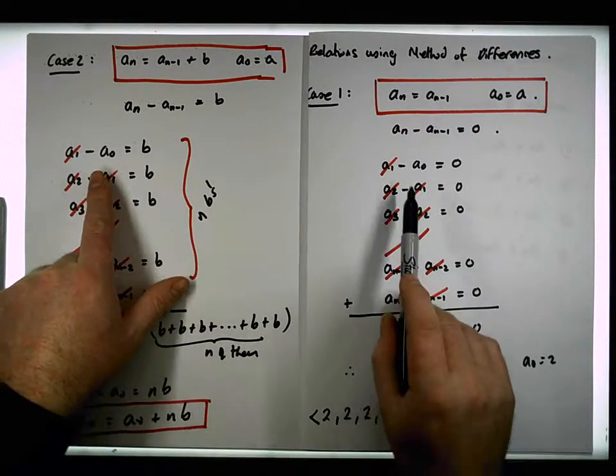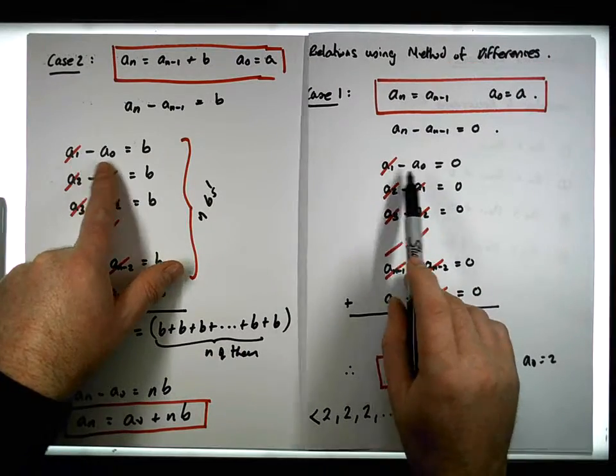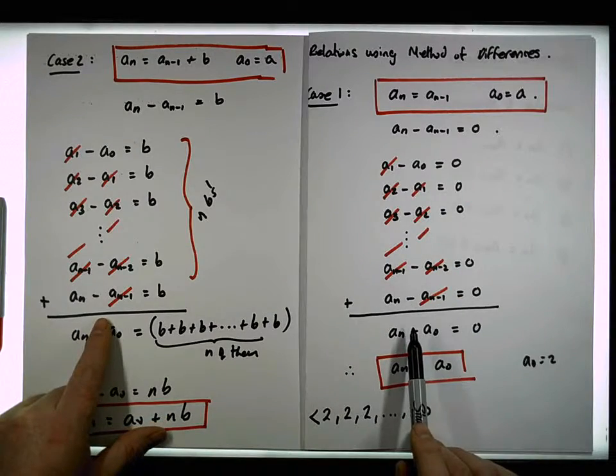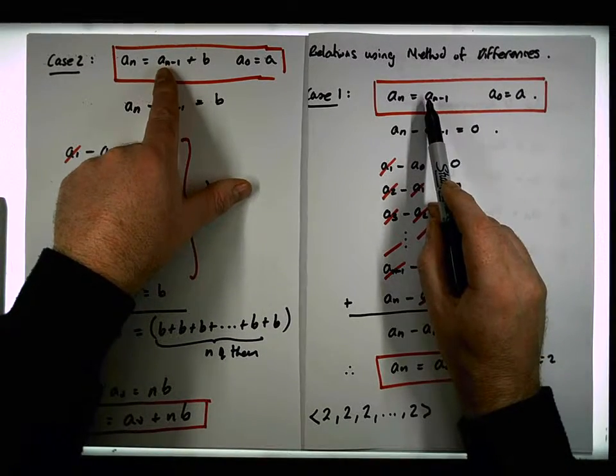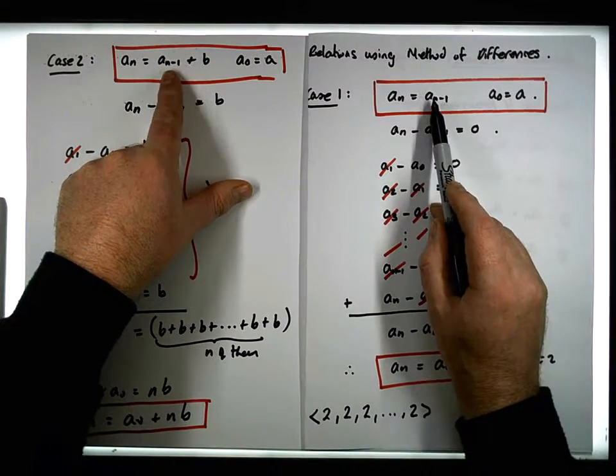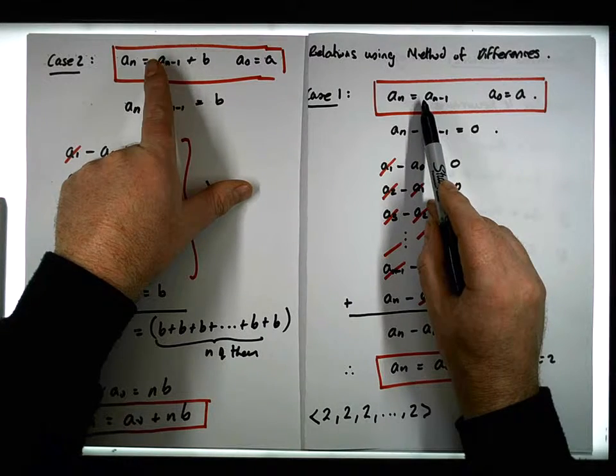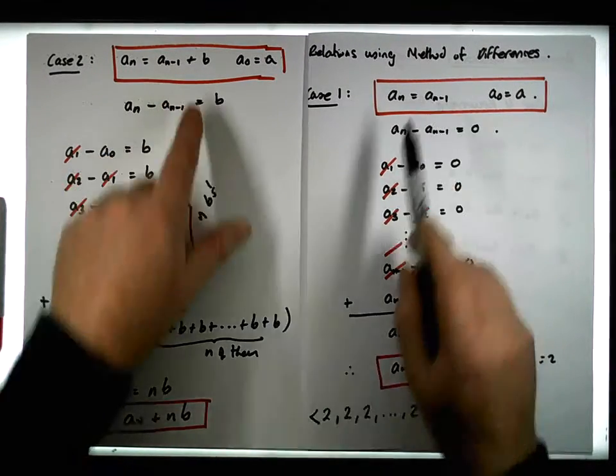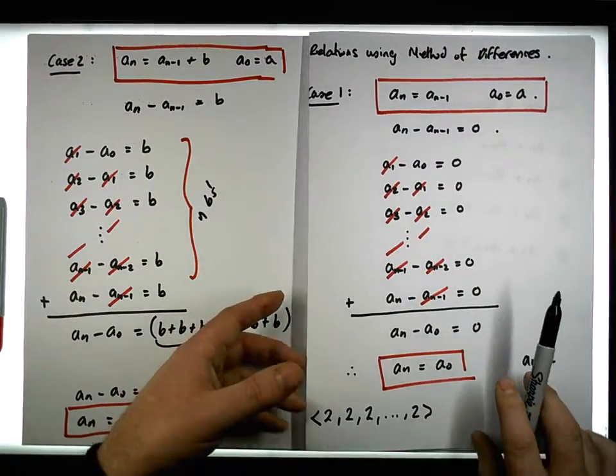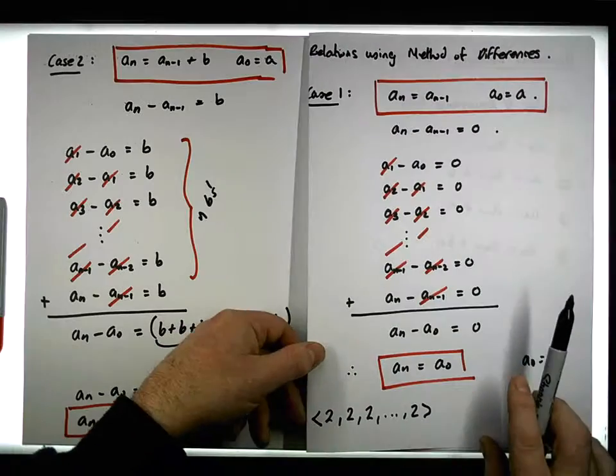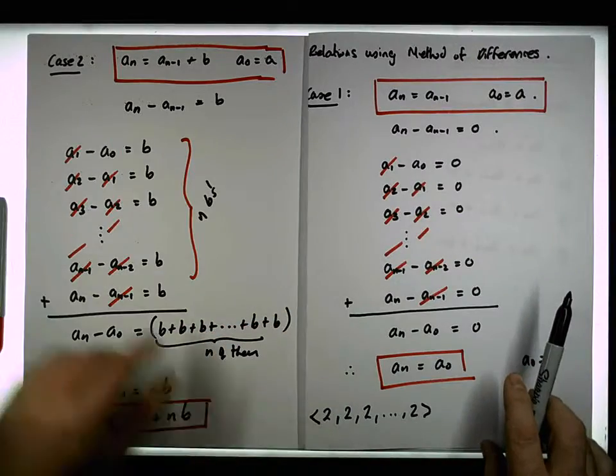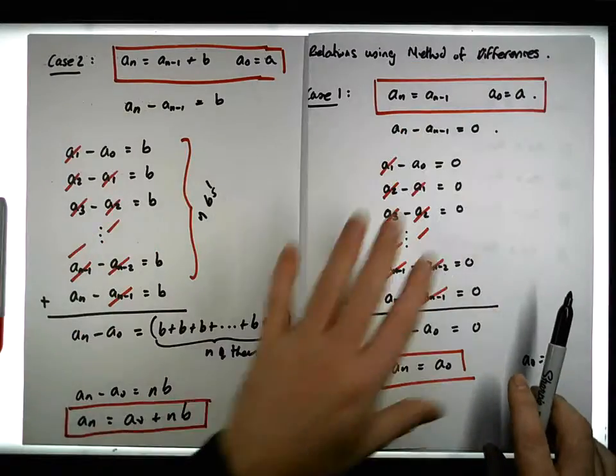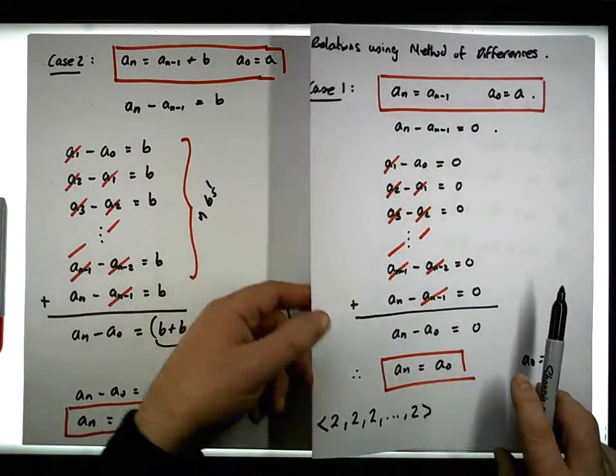But the key thing about the method of differences is this: the method of differences works when the coefficient is equal to one. When the coefficient is not equal to one, this technique isn't going to work. And we'll have a look at that in a few moments. But effectively, what we have is a way to solve certain types of recurrence relations.